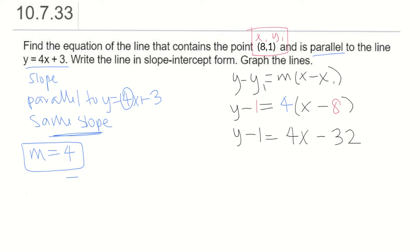And then to solve for y, add 1 to both sides, y equals 4x minus 31. And that is the equation of our line.